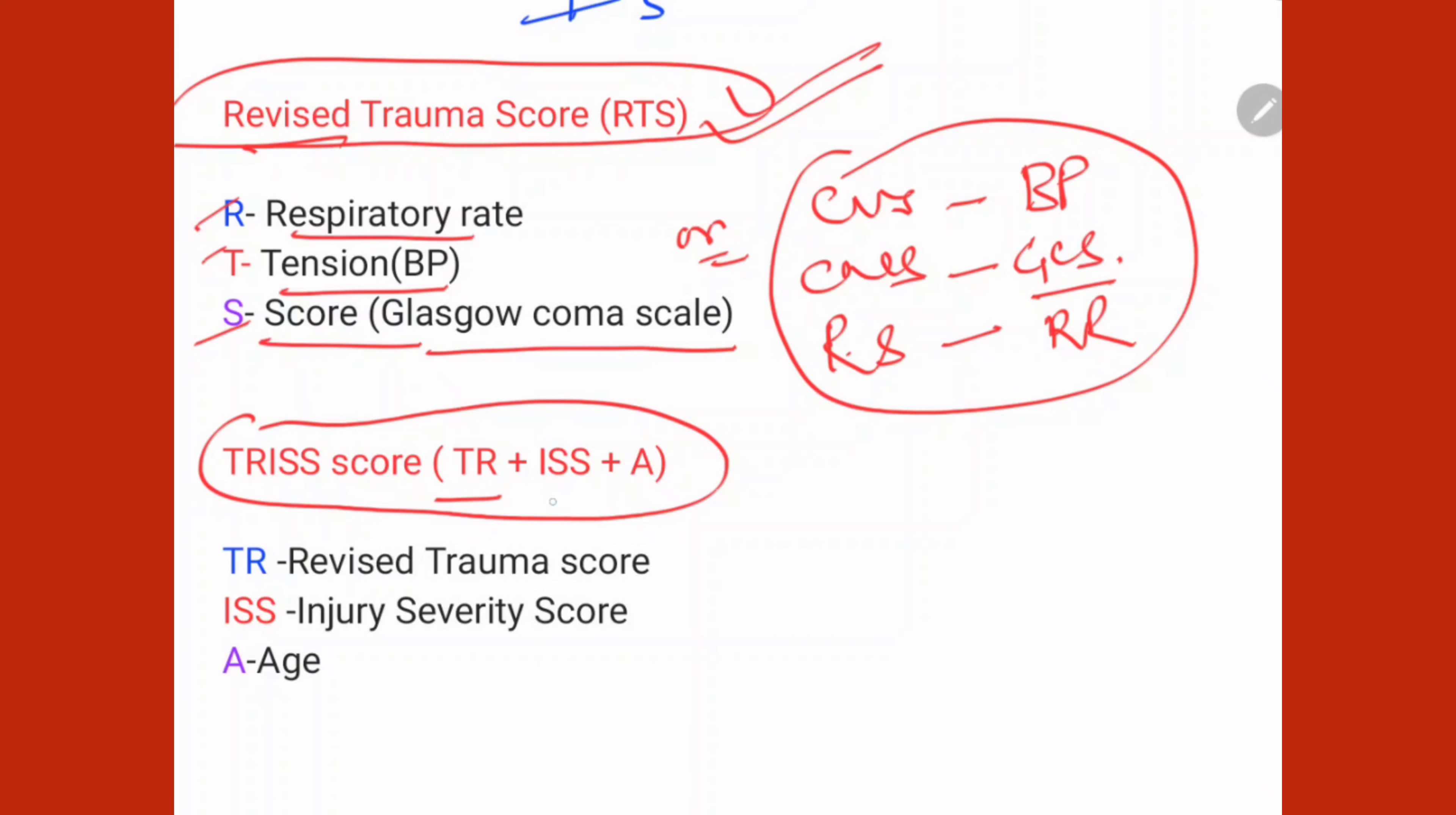Now come to TRIS. We break TRIS into TR, ISS, and A. TR means if we reverse revised trauma score and remove S, we get TR. So TR means Revised Trauma Score. ISS means Injury Severity Score, and A for Age. So TRIS can be remembered this way.